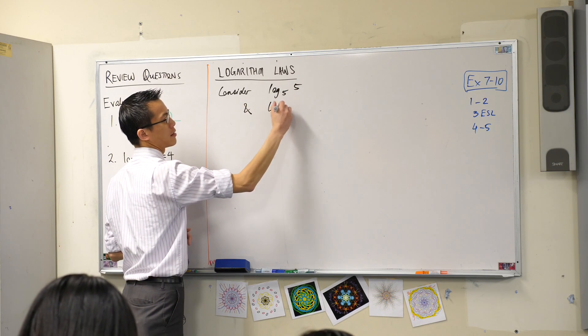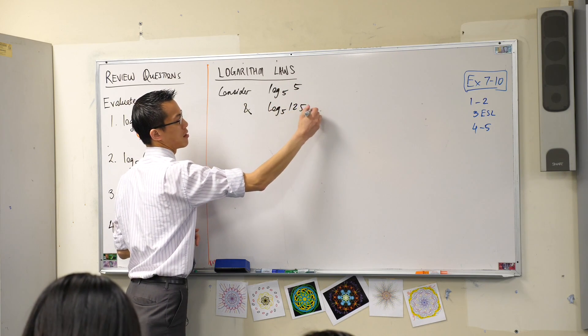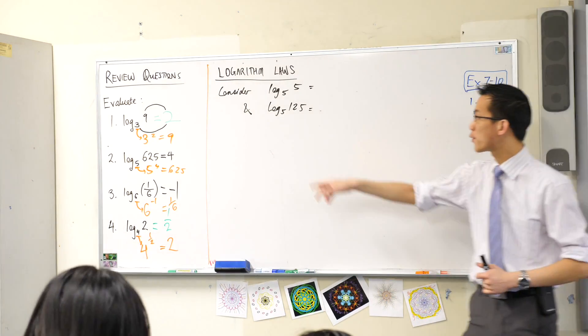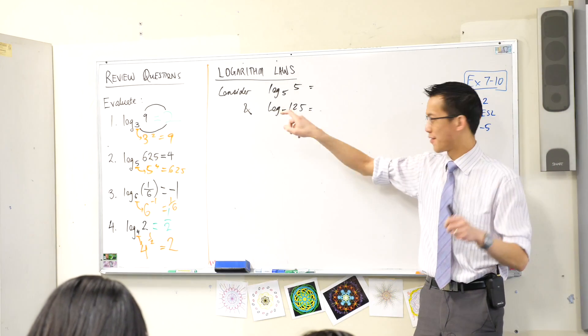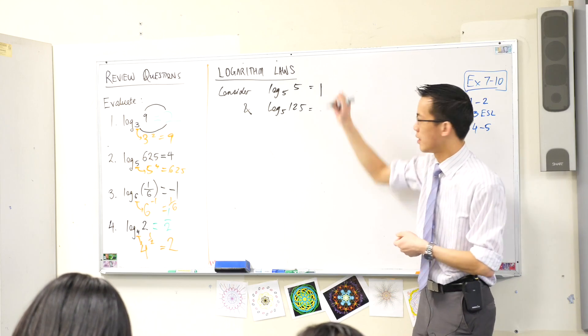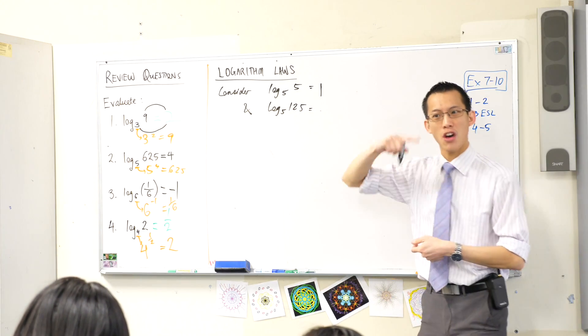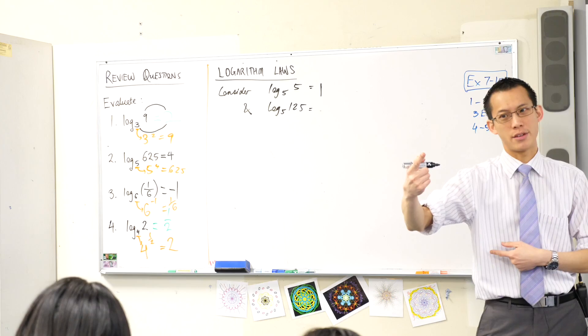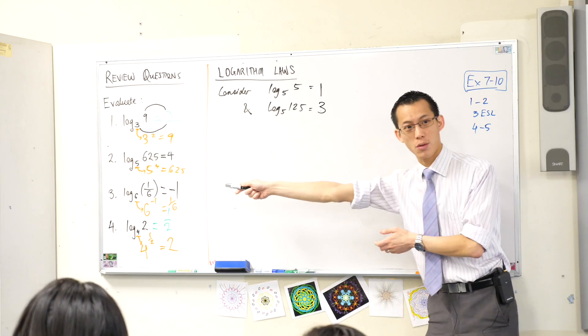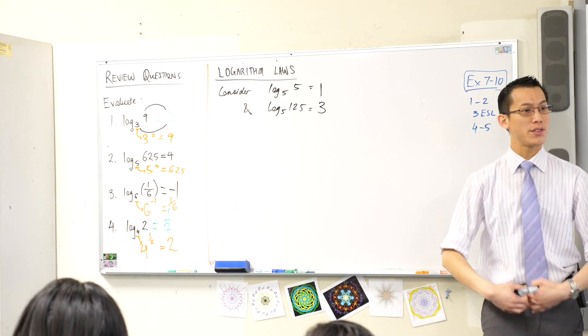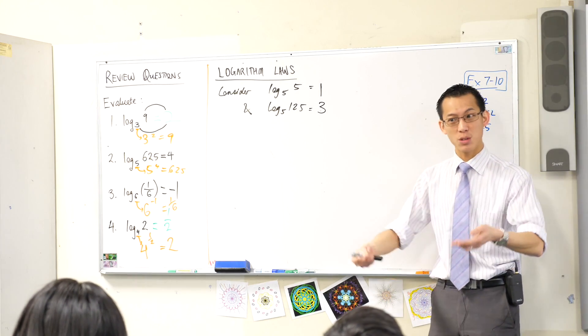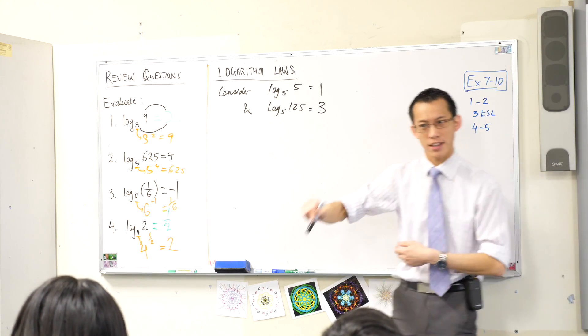So along with this I want you to help me consider two related equations. Let's think about two related logs. This guy and this guy. Can we think about these? Log base 5 of 5. If you're growing at a rate of 5, how long does it take you to get to 5? What power do I need to raise to? It's just 1, isn't it? What about 125? How many times do I have to multiply by 5 to get to 125? Three times, right?